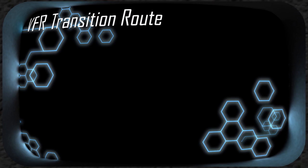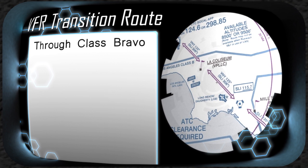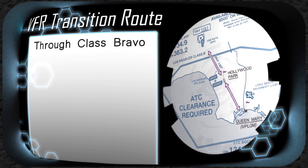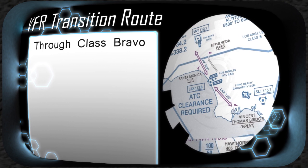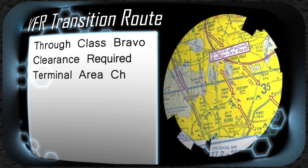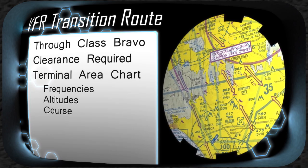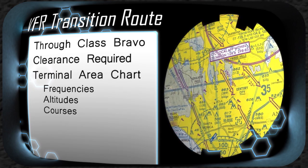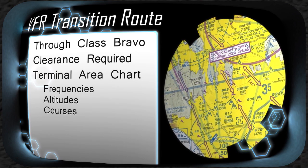A VFR transition route is a published route through Class B airspace to accommodate VFR traffic flying through the area. Before flying a VFR transition route and entering Class B airspace, a pilot must receive clearance from ATC to do so. These routes, found on the terminal area chart, list specific frequencies, altitudes, and courses to fly. VFR transition routes are indicated on the chart by double magenta lines with an arrow indicating the direction of the routes.